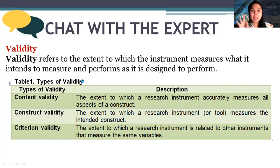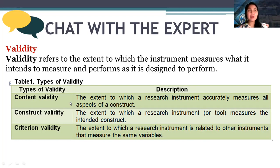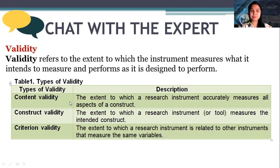There are three types of validity. The first is content validity, which means that all items are measuring the same content. For example, in a questionnaire on attitude towards mathematics, all ten items should be about attitude towards mathematics — not about motivation, not about belief, not about student engagement.